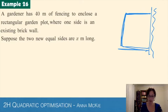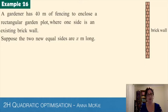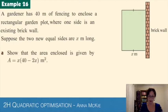That's what we're dealing with here. The two new equal sides are going to be x meters long. Here's a nicely drawn brick wall with our rectangle - equal sides here that we're going to call x. Now we need to construct an equation. What have we got to work with? We have 40 meters total, and we've used up an x and an x amount. So let's think what that third side would be.